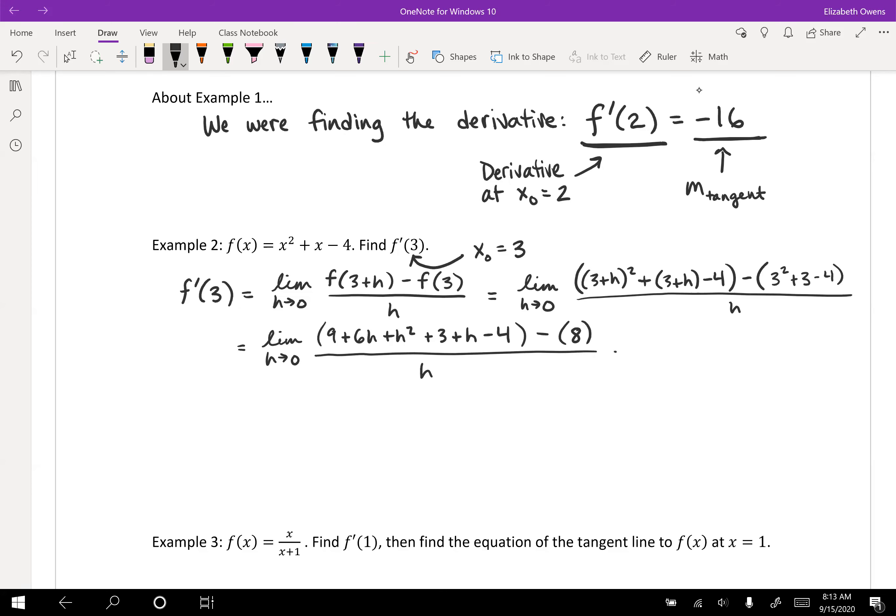And keep writing limits, h approaches 0. Let's expand some things out here. So do some distribution on that 3 plus h squared: 9 plus 6h plus h squared plus 3 plus h minus 4. And then minus 9 plus 3 minus 4, that would be 8, all over h. Let's see what we've got here. Clean it up a little bit. Limit as h approaches 0. Let's combine our constants there in the first part: 9 plus 3 minus 4, hey, that turns out to be 8, as you might suspect here. 8 plus 7h's, 6h plus an h. So 8 plus 7h plus h squared. And then minus our 8 over h. And of course, how convenient. The 8's are gone.